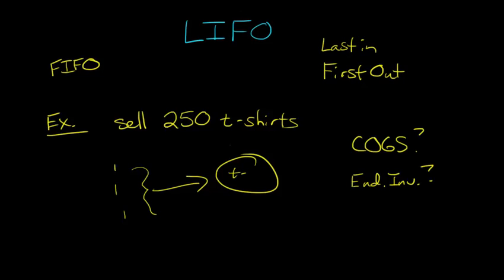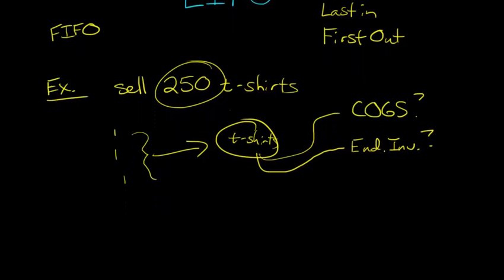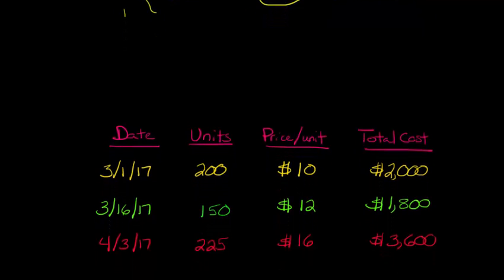So now you've got this pile of t-shirts, and you haven't sold all of them, you just sold 250. And so you're trying to figure out, out of this pile, which ones go to ending inventory and which ones go to cost of goods sold, because you might have paid different prices for them. So let's walk through an example of how we'd use LIFO to compute cost of goods sold and ending inventory.